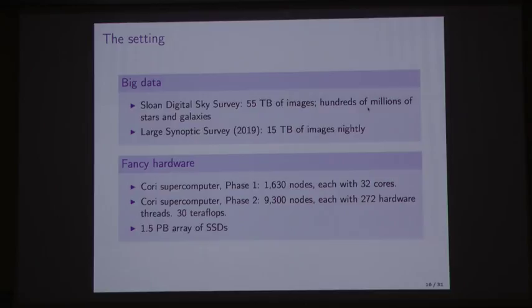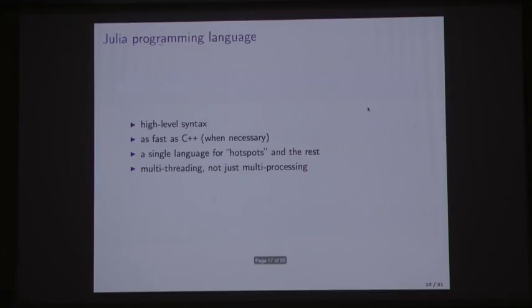Fortunately we have some fancy hardware to work with. We used the Cori Phase 1 supercomputer at Lawrence Berkeley Lab, and that has 1,600 nodes. These are pretty beefy nodes with 32 cores each. Cori Phase 2 just came online in the last couple of months and we're experimenting with that now. That has almost 10,000 nodes and has this new Intel Knights Landing chip that has 272 hardware threads. In total, Cori Phase 2 has something like 10 times as many teraflops as Cori Phase 1. With this much data, just loading the data takes quite a while, so we're fortunate to have an array of SSDs to load the data from.